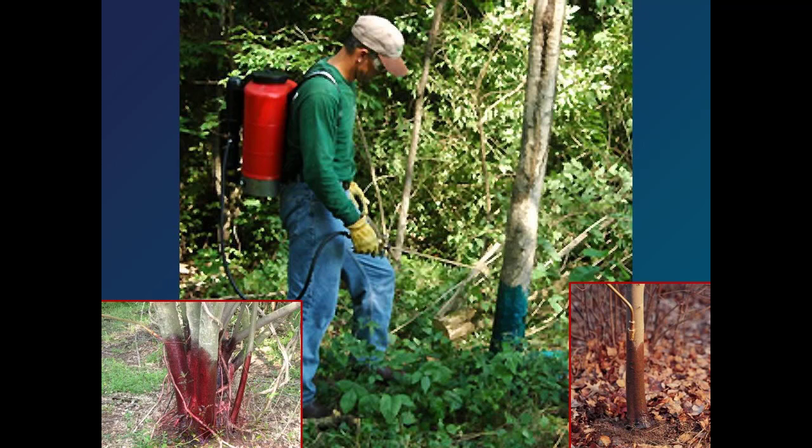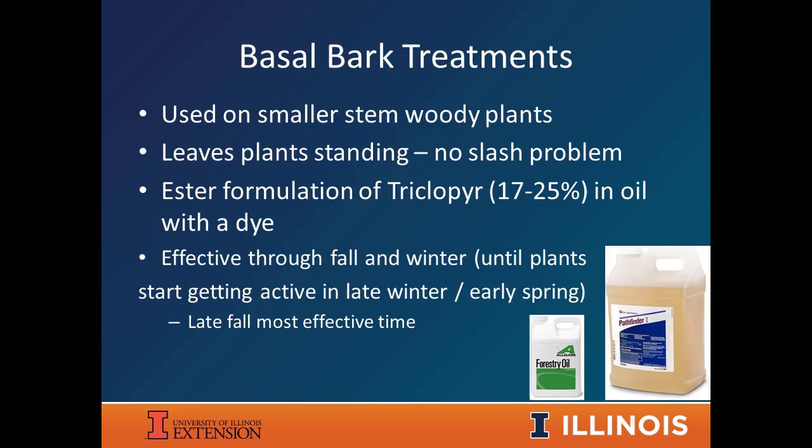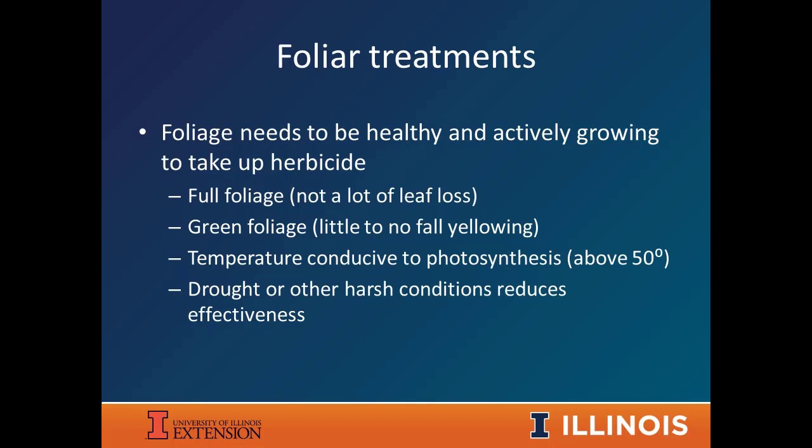Basal bark seems highly effective for some plants but not others. We use it a lot for autumn olive and Bradford callery pear. It doesn't work well for honeysuckle, but for species with thinner, tighter bark it works pretty well. Using backpack sprayers with a long wand helps you reach all stems. It uses a little more herbicide and leaves slash standing, but fall and winter are the best times to do it.